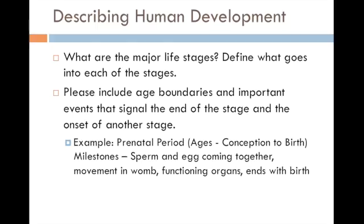I want you to think about the major life stages that people go through. Pause the video and diagram what the major life stages are, what goes into each stage, the age boundaries that define each stage, and what important events signal the end of one stage and the onset of another. I'll start you off: the first stage might be the prenatal period, from about 38 weeks prior to birth — or conception — until birth itself. Some major milestones might include the sperm and egg coming together, movement in the womb, functioning organs like the heart beating, ending with the birth of the child.